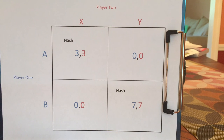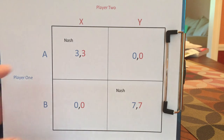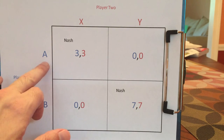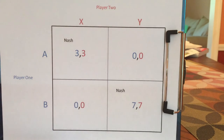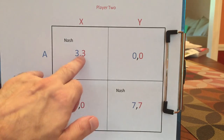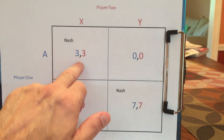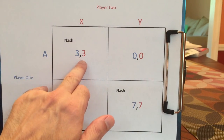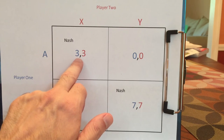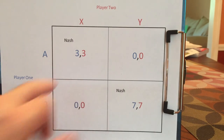And player two would say: I have no control over player one. If player one is going to play A, the best I can do is X. So this is why AX is a no-regrets outcome — this is a Nash Equilibrium. You can imagine both writing down A and X, then revealing. No one's going to say: oh, I wish I'd done something different.